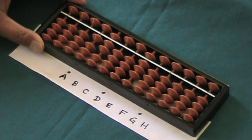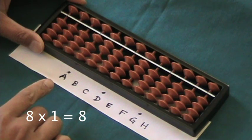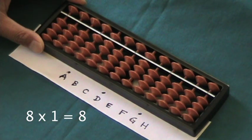First, we'll multiply 8 by 1 and set the product on rod G.